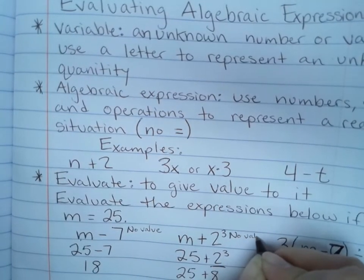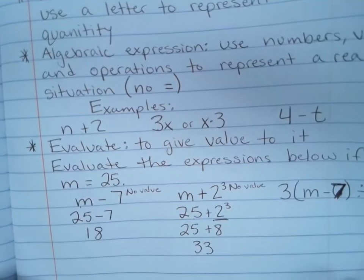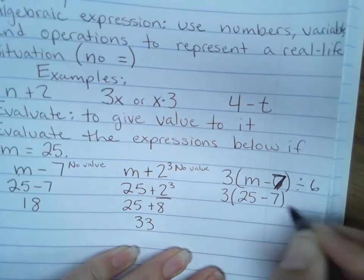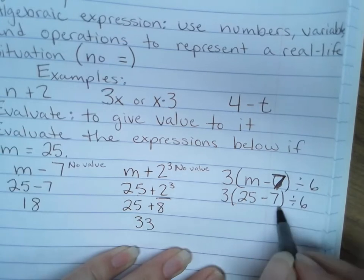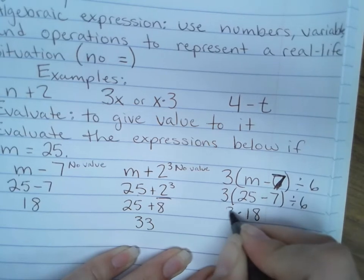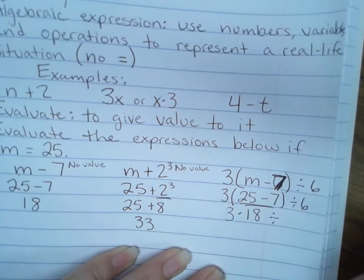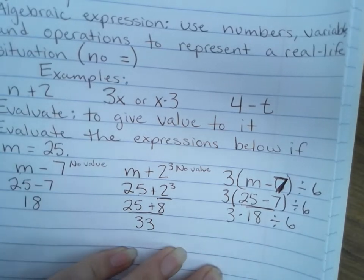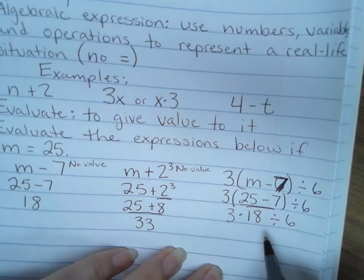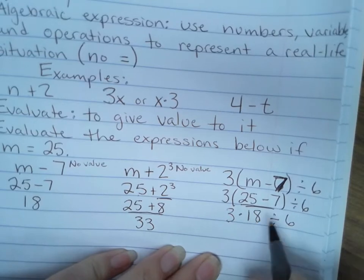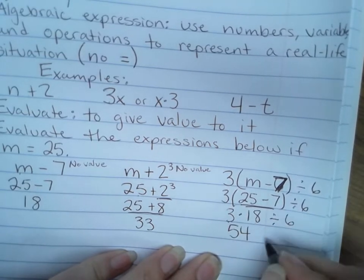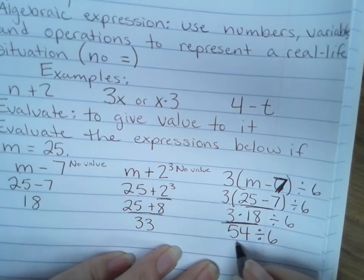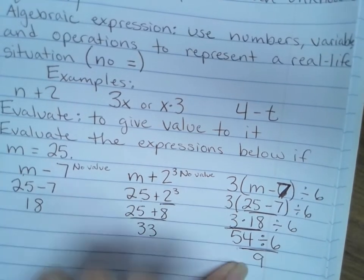Right here, this has no value to me. Now it does because I know what m is worth. Here, plug in what you know. Notice how I'm just replacing 25 where m was. Order of operations, I have to do inside the parentheses first. This is worth 18 times 3 divide by 6. I did this next, order of operations. Now division. 54 divided by 6 is 9. Now this expression has a value of 9 once I know what m is worth.